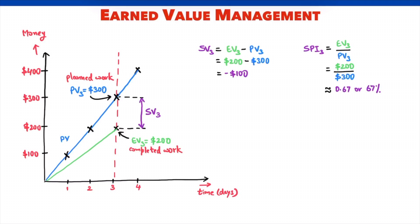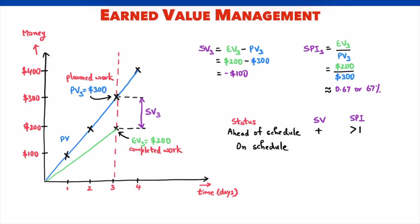Interpretation of these parameters is simple. If a project is ahead of schedule, earned value will be greater than planned value — schedule variance is positive and SPI is greater than 1. If a project is on schedule, earned value equals planned value — schedule variance is 0 and SPI equals 1. If a project is behind schedule, earned value is smaller than planned value — schedule variance is negative and SPI is less than 1.